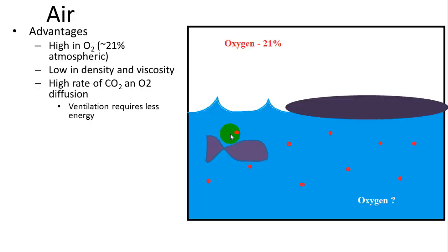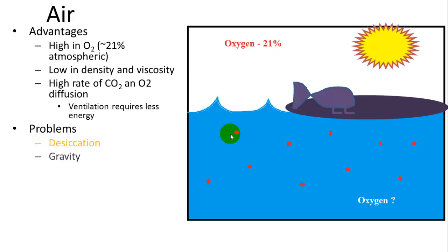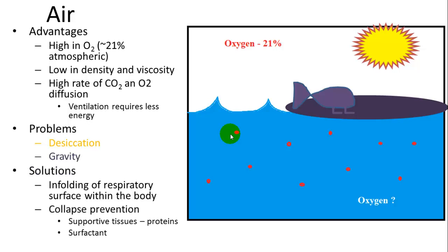Air breathing has advantages: air is much higher in oxygen, low in density and viscosity, allowing oxygen to travel further. Diffusion rates of carbon dioxide and oxygen are higher, so ventilation requires less energy. However, problems include desiccation — the air is dry and evaporation rates are high — and gravity causes gills to clump together without water's buoyancy. Solutions include infolding of the respiratory surface within the body and structures to prevent collapse, such as supportive tissues and surfactant.